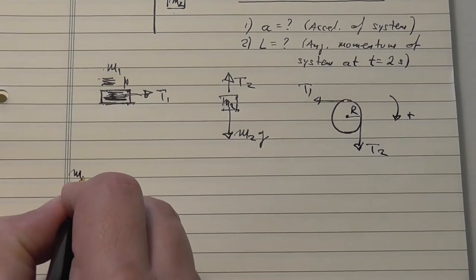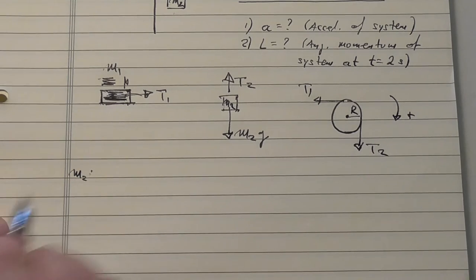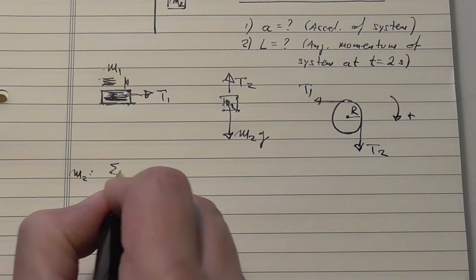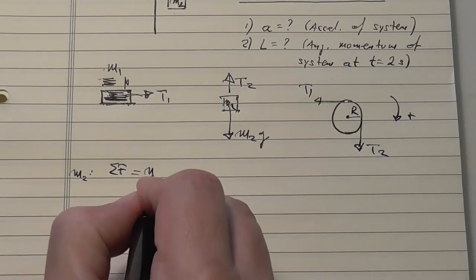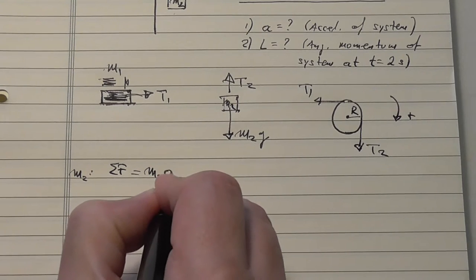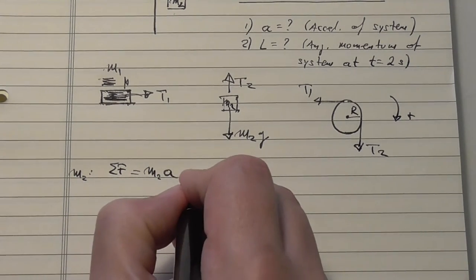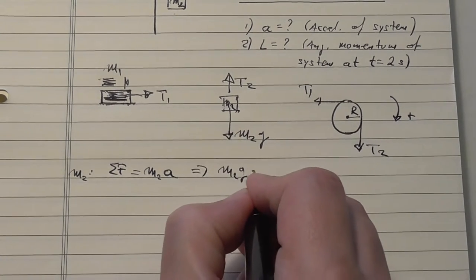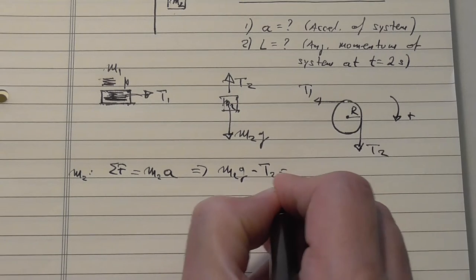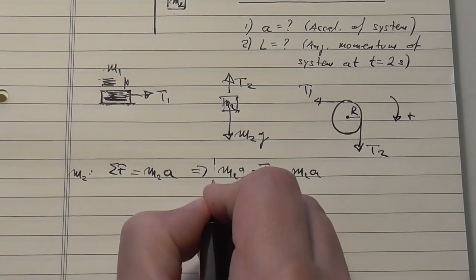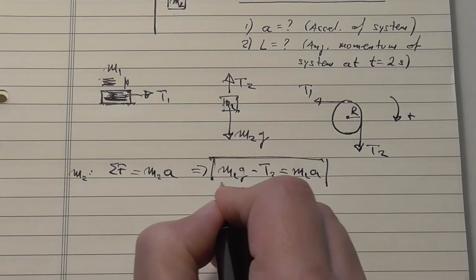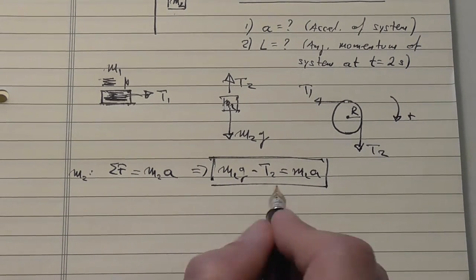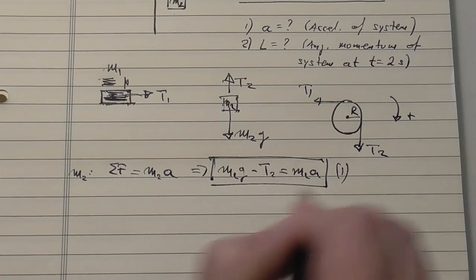Apply Newton's laws on two bodies. Let's start with this one. Sigma F, sum of the forces, is equal to m2 times the acceleration. So m2g, the weight, minus the tension T2 is equal to m2a. The skipping is compensated by the nice sound that the nib has on the paper. Let's call this equation 1.